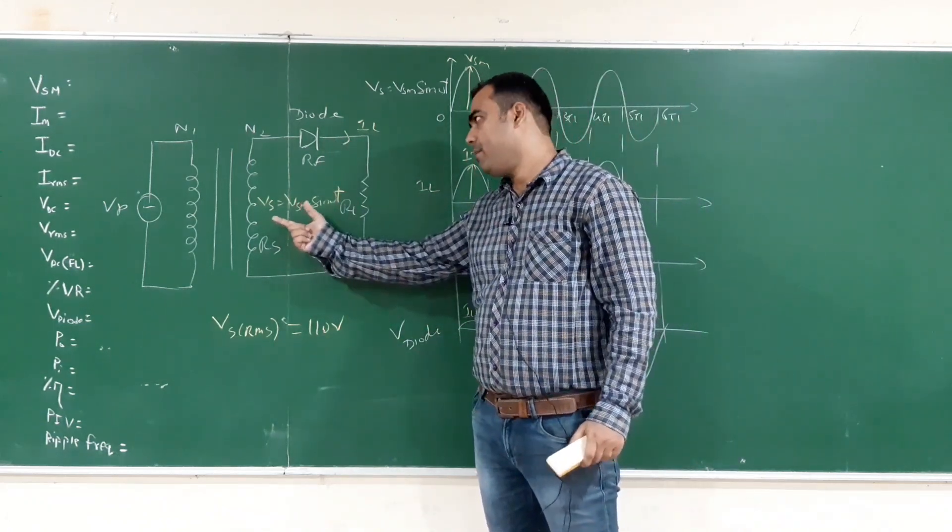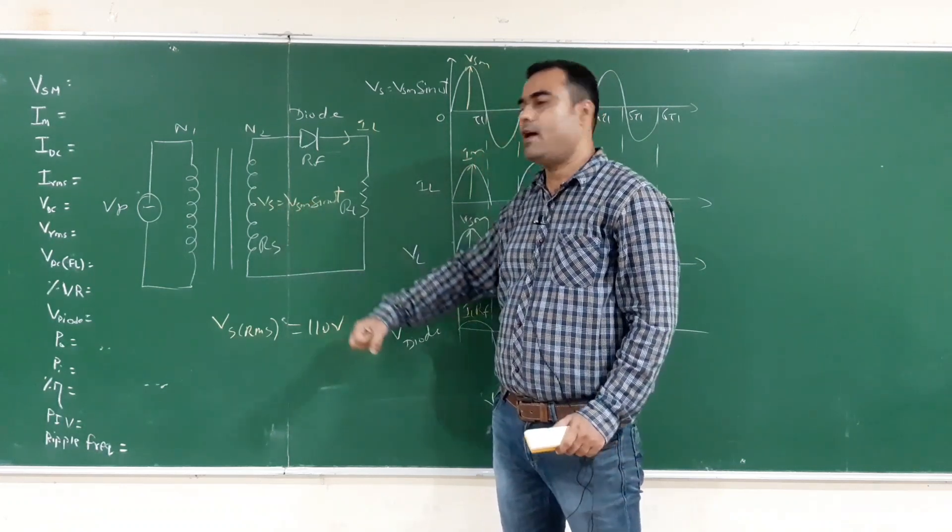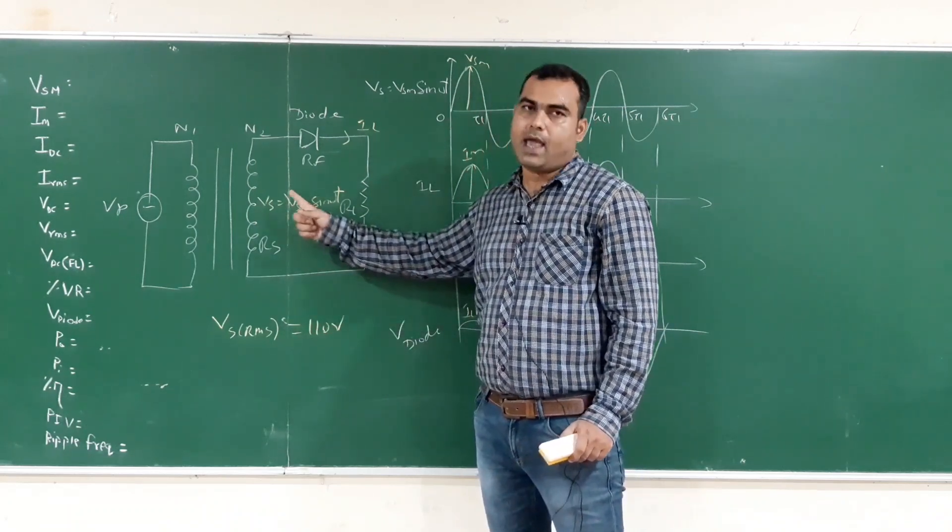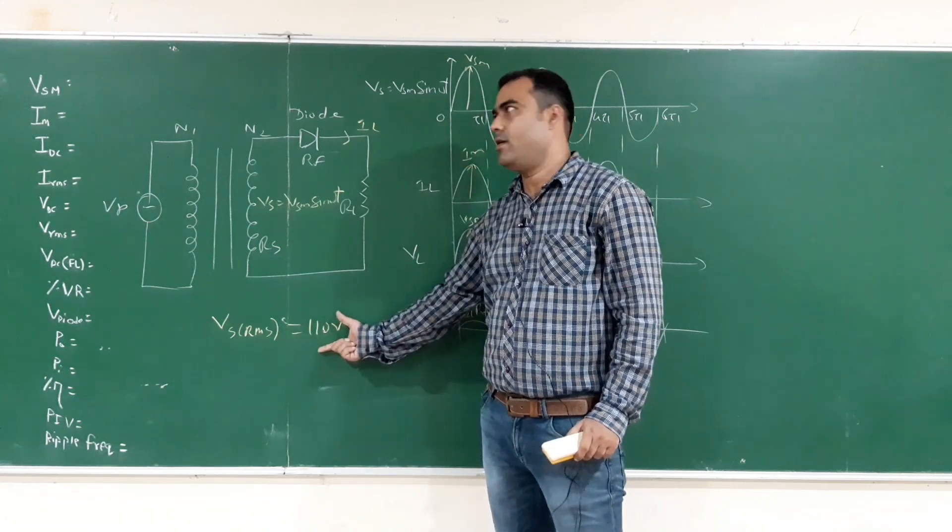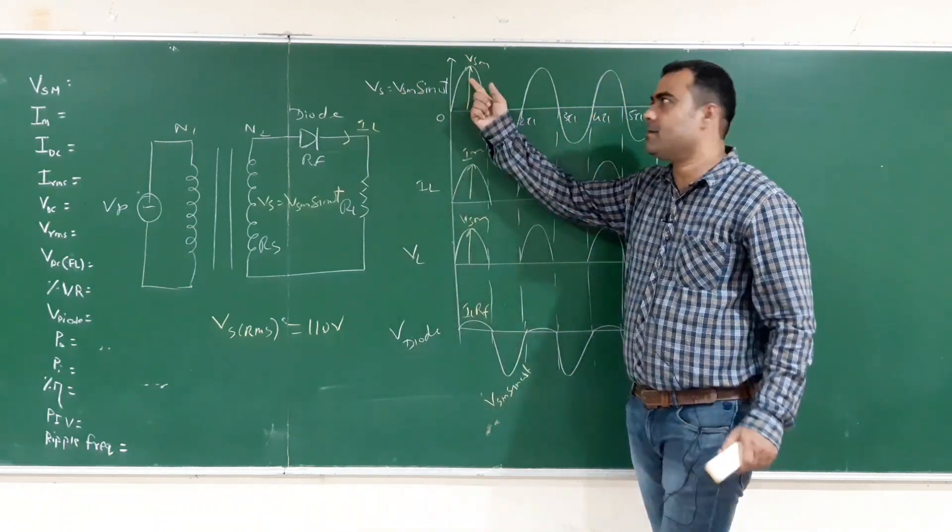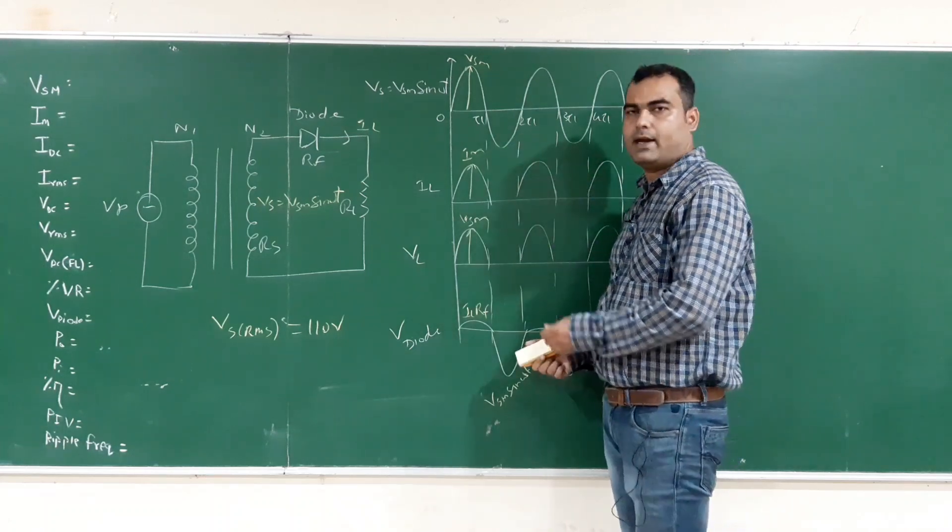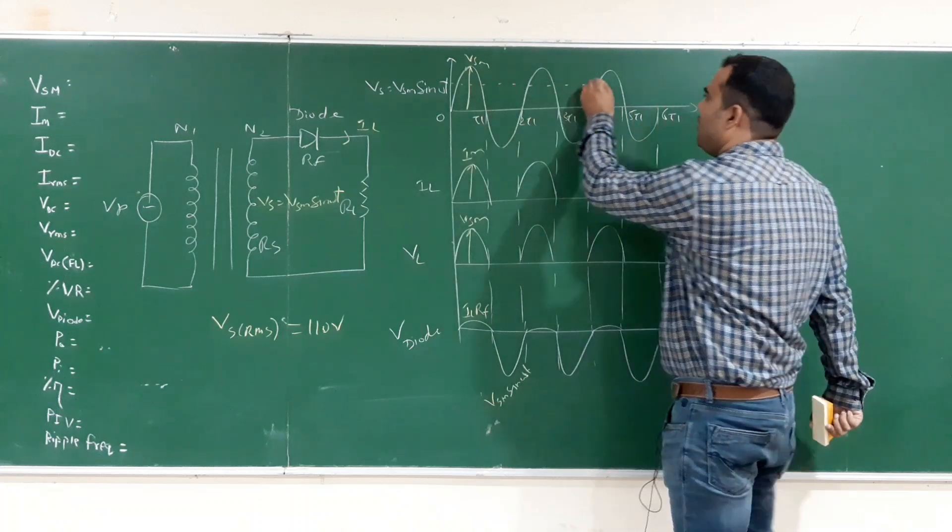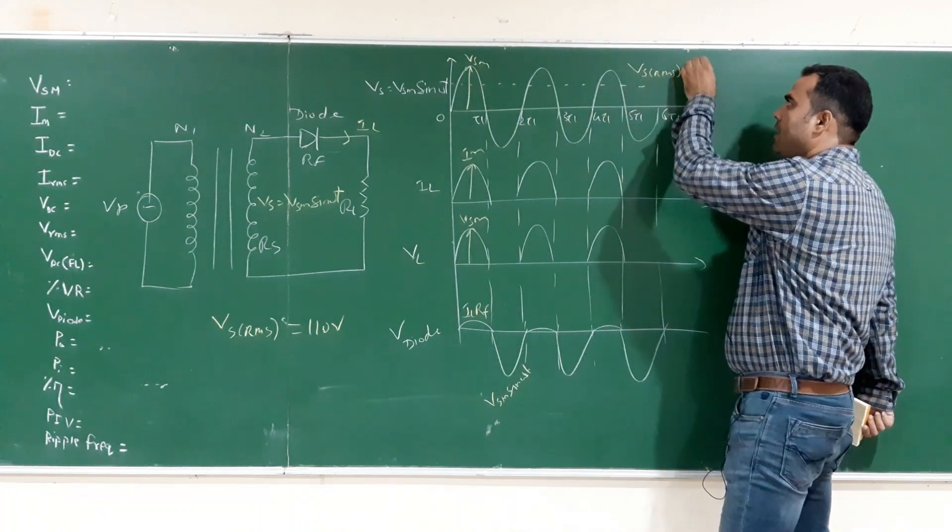We have half wave rectifier, the voltage applied is Vs equals to Vsm sin omega t and given data is 110 volt. The supply voltage is the RMS value and the RMS value is 110 volt. The waveform Vs equals to Vsm sin omega t. The waveform's RMS value is peak value divided by root 2, which is 110 volt.